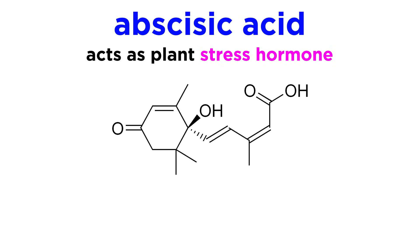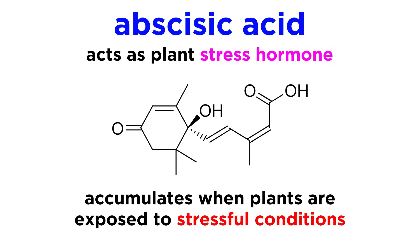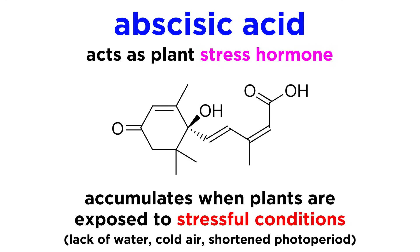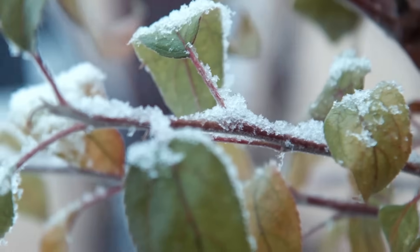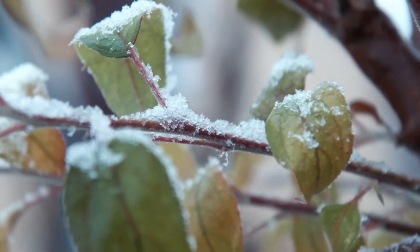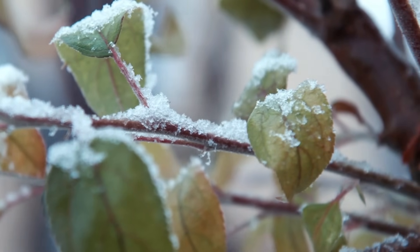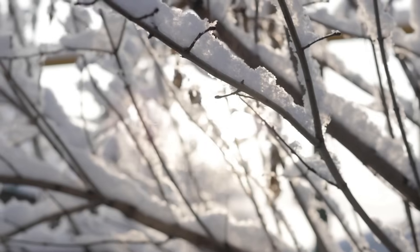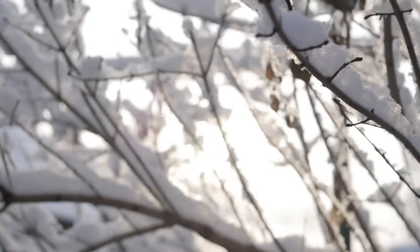Abscisic acid can be thought of as a plant stress hormone, because it accumulates when plants are exposed to stressful conditions, like a lack of water, cold air temperatures, or shorter amounts of sunlight each day, also called a photoperiod. When a plant or seed begins to experience these conditions, abscisic acid puts the brakes on a lot of the plant's growth functions in order to conserve its resources. It is important for signaling tree branches to stop growing in fall and winter, and the same hormone causes seeds to go dormant in the soil until spring, when warm temperatures return.